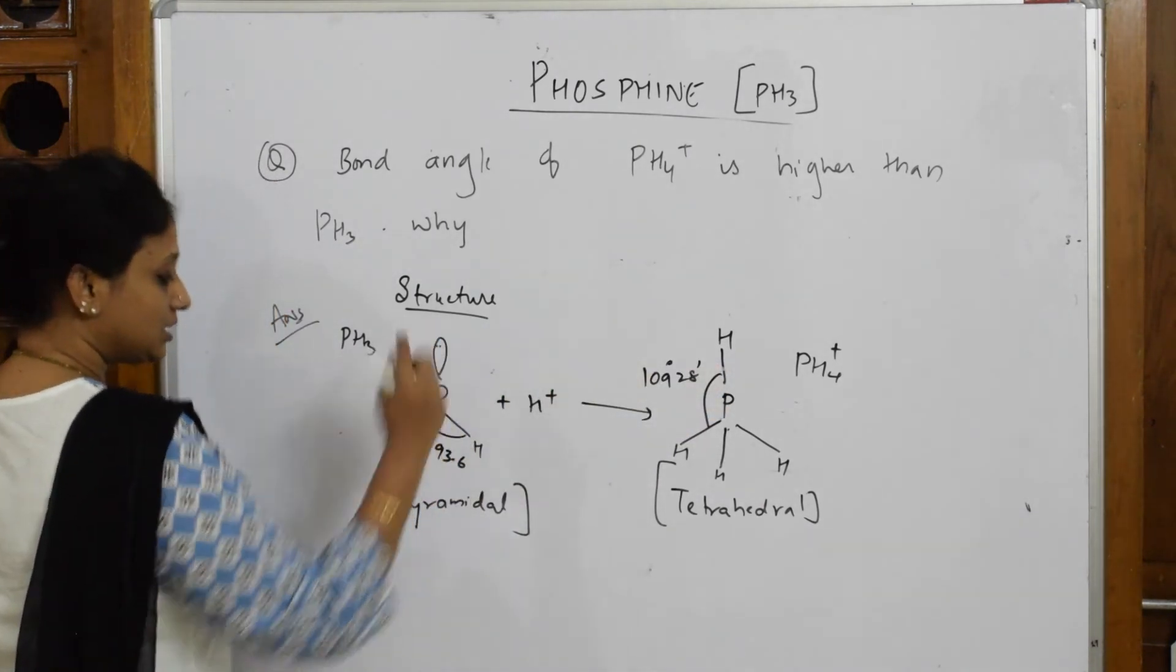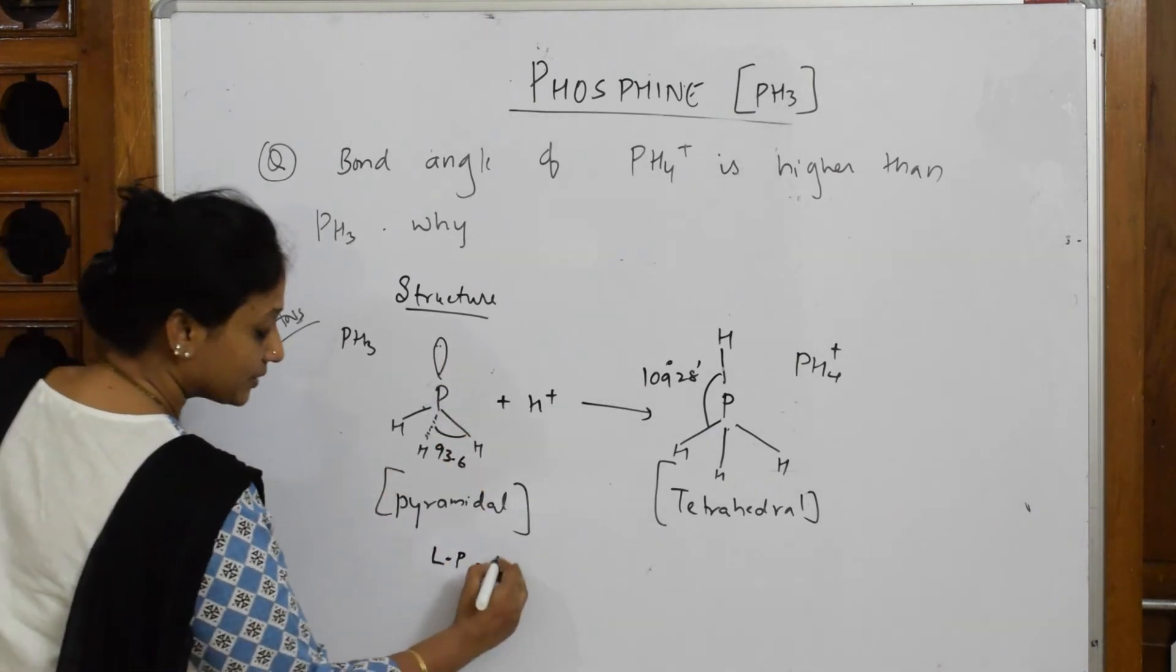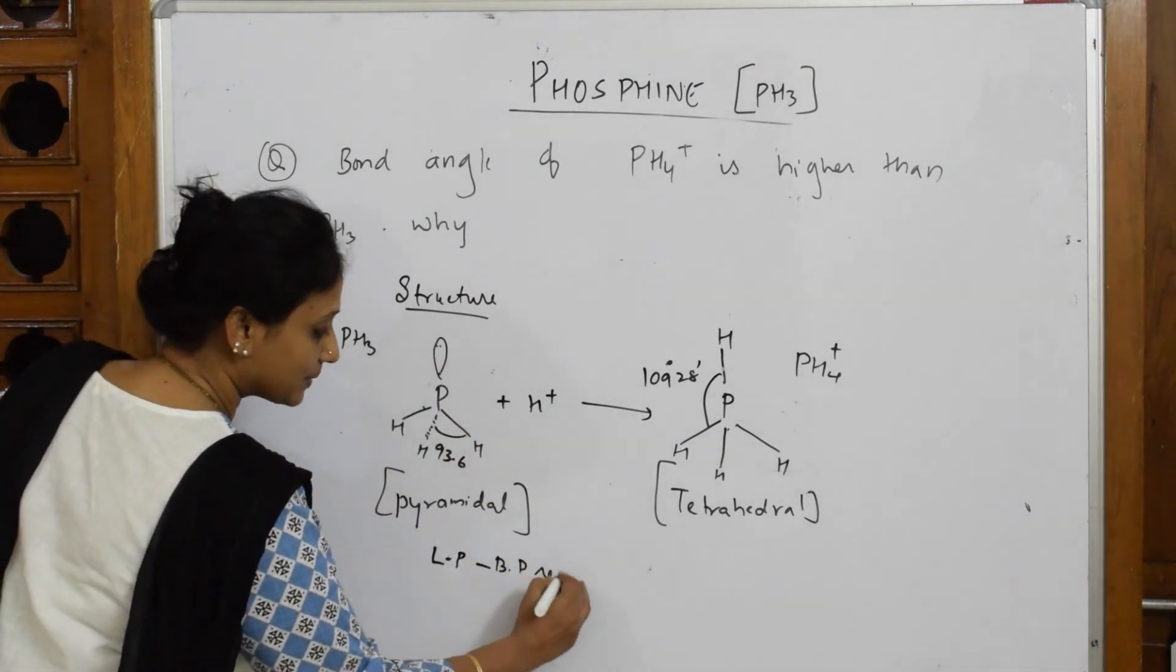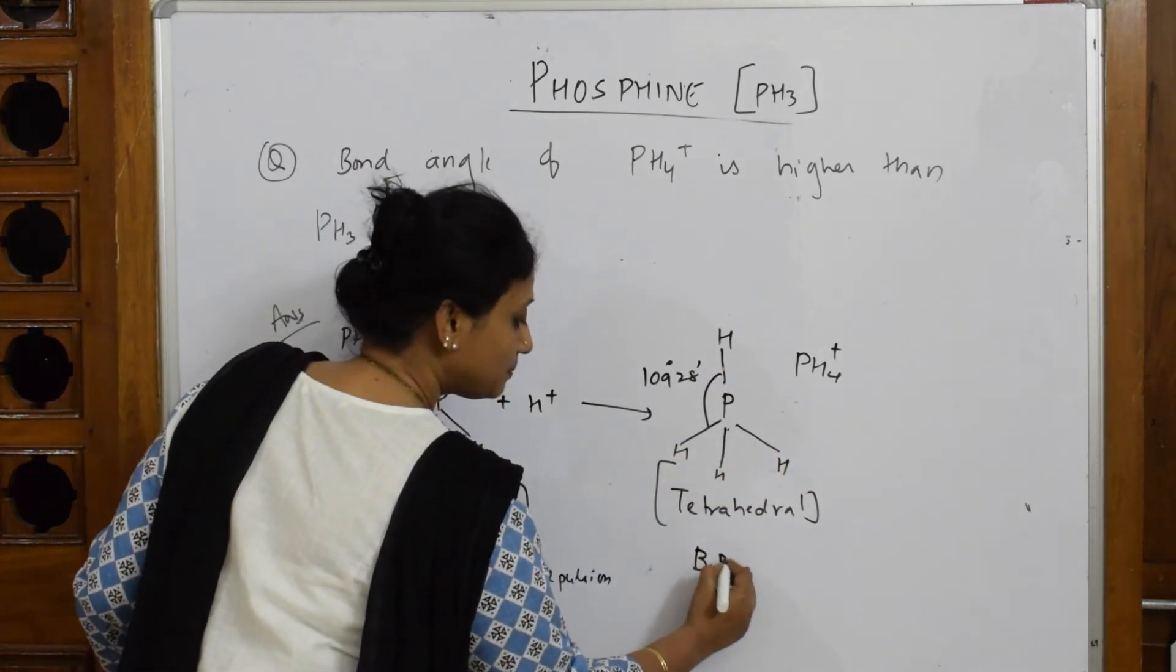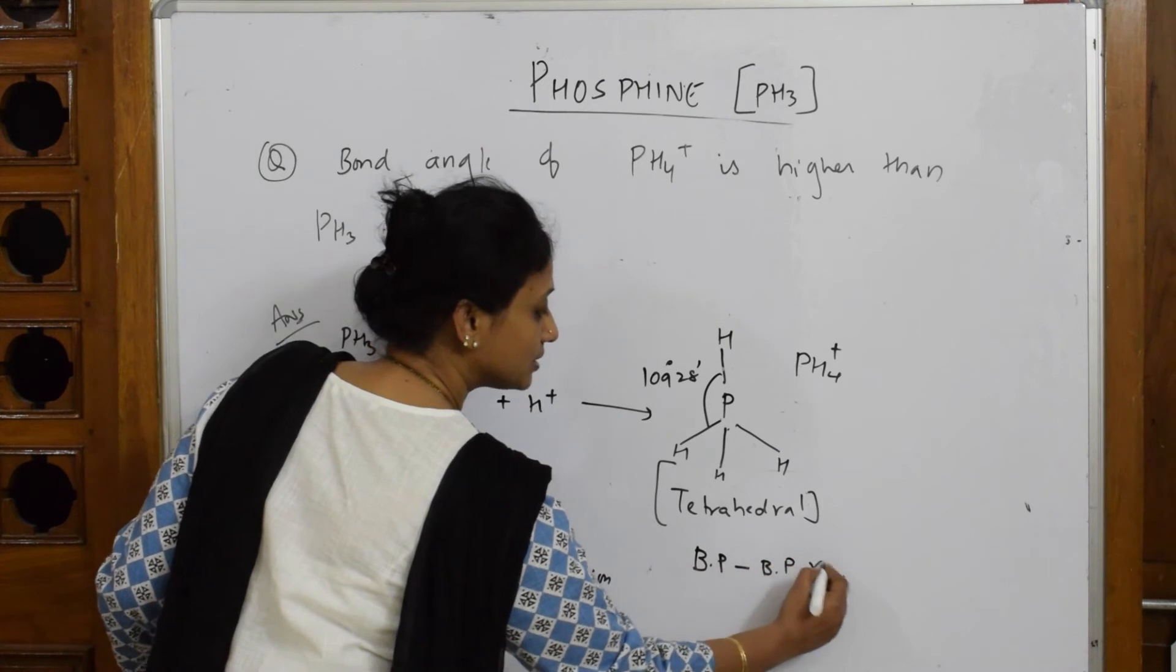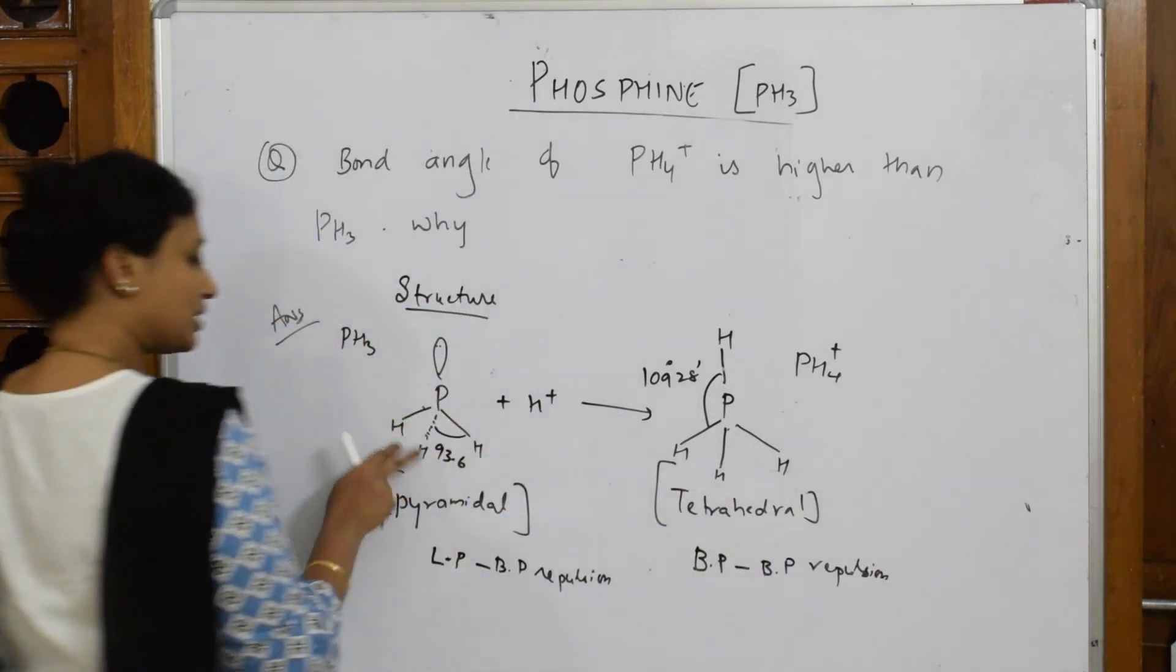That is the only difference. Here you have lone pair-bond pair repulsions. Here what do you find? Bond pair-bond pair repulsions.